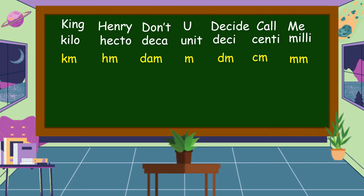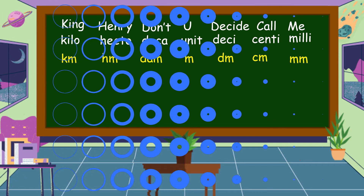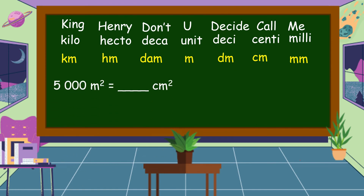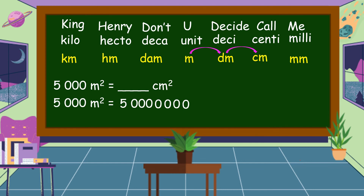We'll use these units to convert square meters to square centimeters and vice versa. Going back to our problem: convert 5,000 square meters to square centimeters. When converting meter-squared to centimeter-squared, each jump counts two zeros. Counting the jumps from meter to centimeter: one, two — that's two jumps, giving us four zeros. So we add four zeros to 5,000.